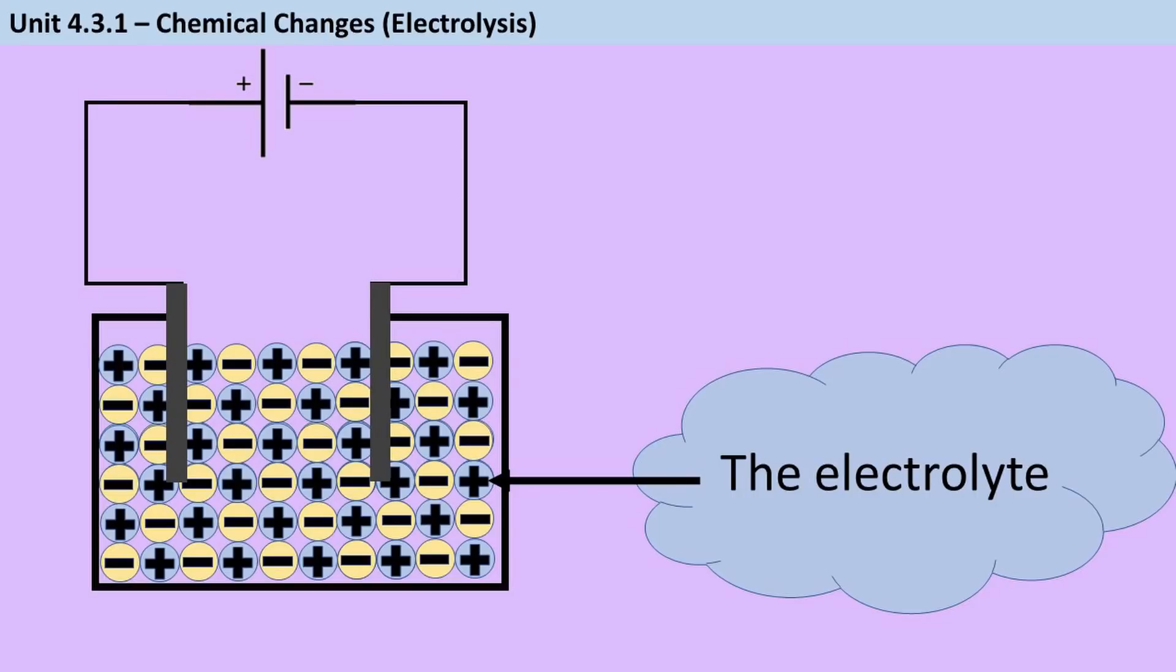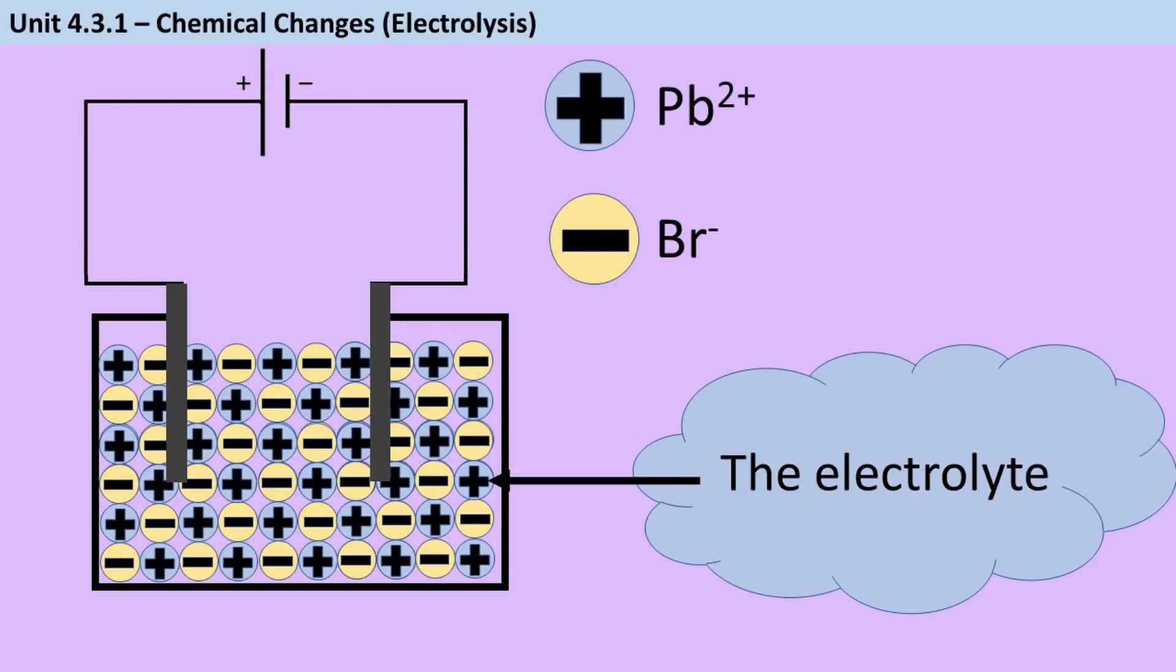We have a vessel full of electrolyte. Remember, that's our ionic compound. It's made up of positive metal ions and negative non-metal ions. In the example here, let's say that we have positive lead ions and negative bromide ions. Important tip, remember that non-metal elements like bromine, chlorine and oxygen form ions whose names end with '-ide', bromide, chloride, oxide. You won't get the marks in an electrolysis question if you start talking about an oxygen ion.